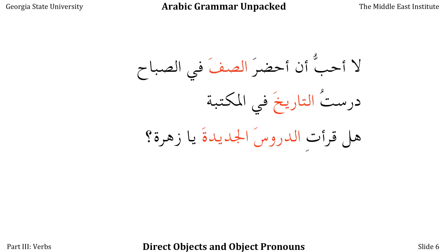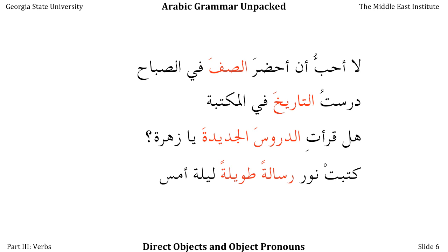In هَلْ قَرَأْتِ الدروسَ الجديدةَ يا زهرة, both دروس — the direct object of قَرَأْتِ — and الجديدة, its adjective, are both in the منصوب case, because any adjective is always in the same case as the noun it modifies. In كَتَبَتْ نور رسالةً طويلةً ليلة أمس, رسالة is indefinite, so we mark it with تنوين الفتح, pronounced as an N sound. Because it's a direct object it's in the منصوب case, it's indefinite, so it gets تنوين endings, and its adjective is in exactly the same case.